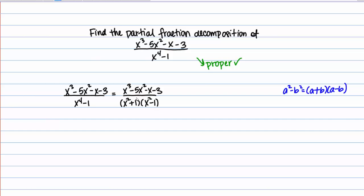I always want to factor completely — that means factor as much as I can. So I want to examine each of these factors to see if any can be factored further. Now x squared plus 1 is irreducible, or prime — it cannot be factored any further because it's a sum of squares. But x squared minus 1 is another difference of squares, so I can factor that further. I'm going to keep my x squared plus 1, but x squared minus 1 becomes x plus 1 times x minus 1. So we're completely factored, and we can verify that nothing cancels out, so our rational function is reduced as much as possible.